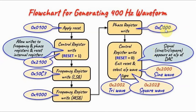Next, we write into the phase register a value that gives us 0 phase shift. Finally, we write into the control register a value that exits the reset and selects the output waveform. Depending on the value written, we get a sine wave, a square wave, or a triangular waveform.